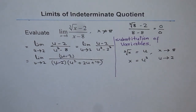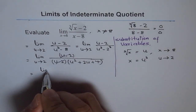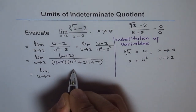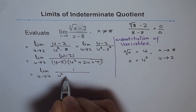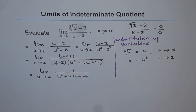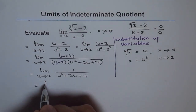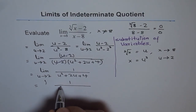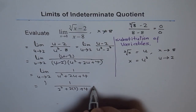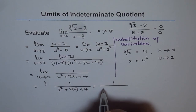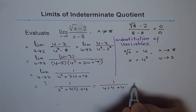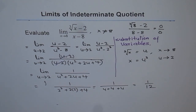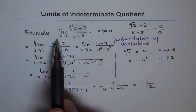u minus 2 divided by u minus 2 is 1, so we can write this expression as limit as u approaches 2 of 1 over u squared plus 2u plus 4. Now we can substitute 2 to get the limit: 1 over 2 squared plus 2 times 2 plus 4, which is 1 over 4 plus 4 plus 4, and that is 1 over 12. So our answer is 1 over 12, which is the limit of this function as x approaches 8.